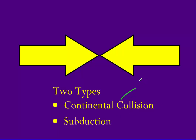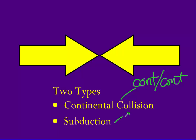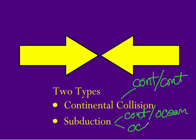Continental collision occurs when you have two continental plates coming together. Subduction is when you have a continental plate colliding with an oceanic plate, or you have two oceanic plates coming together.